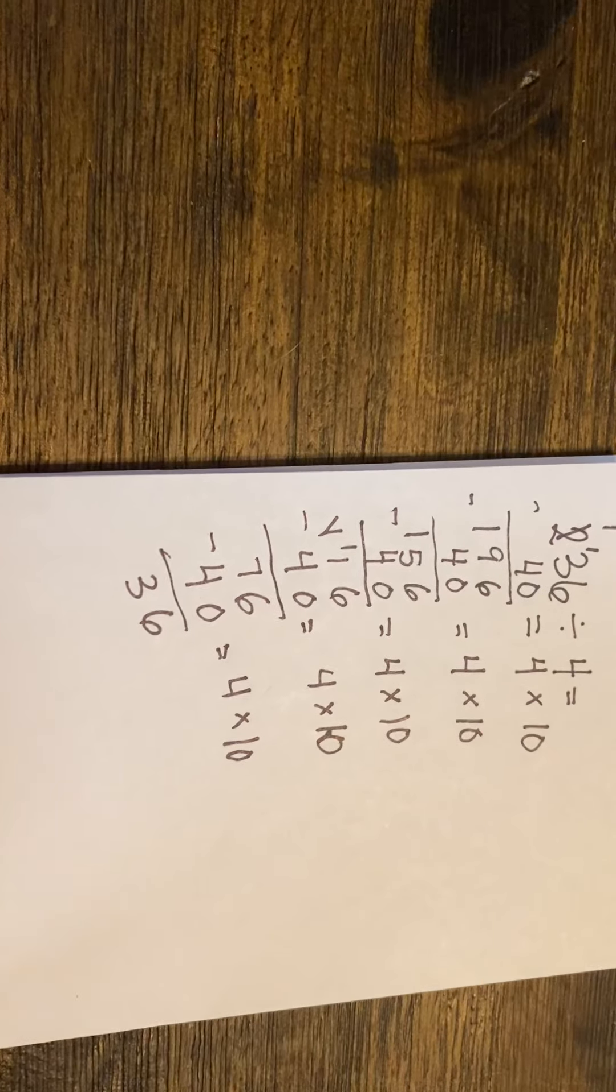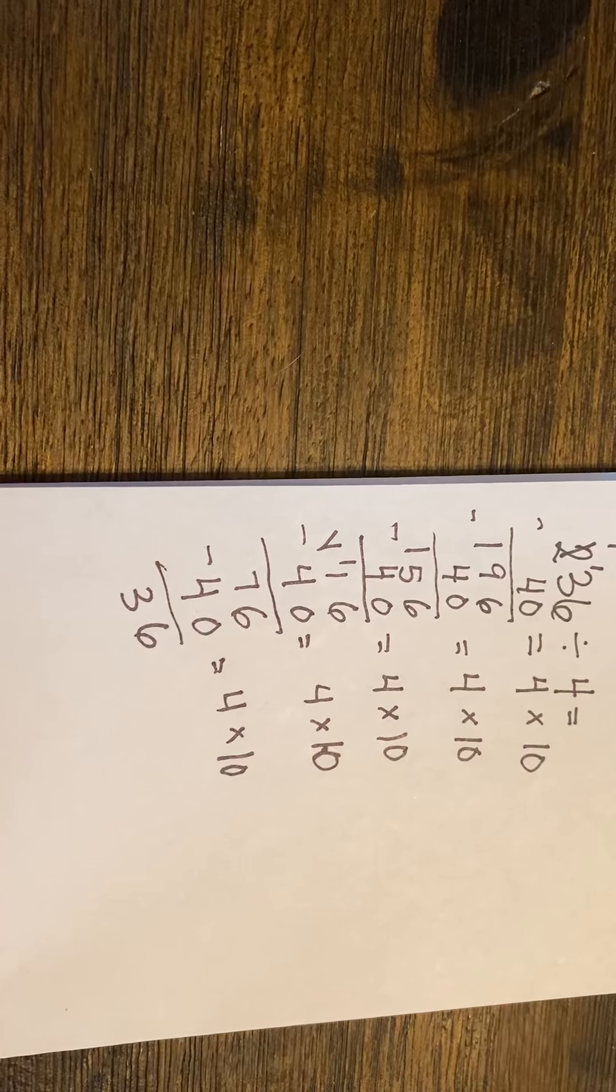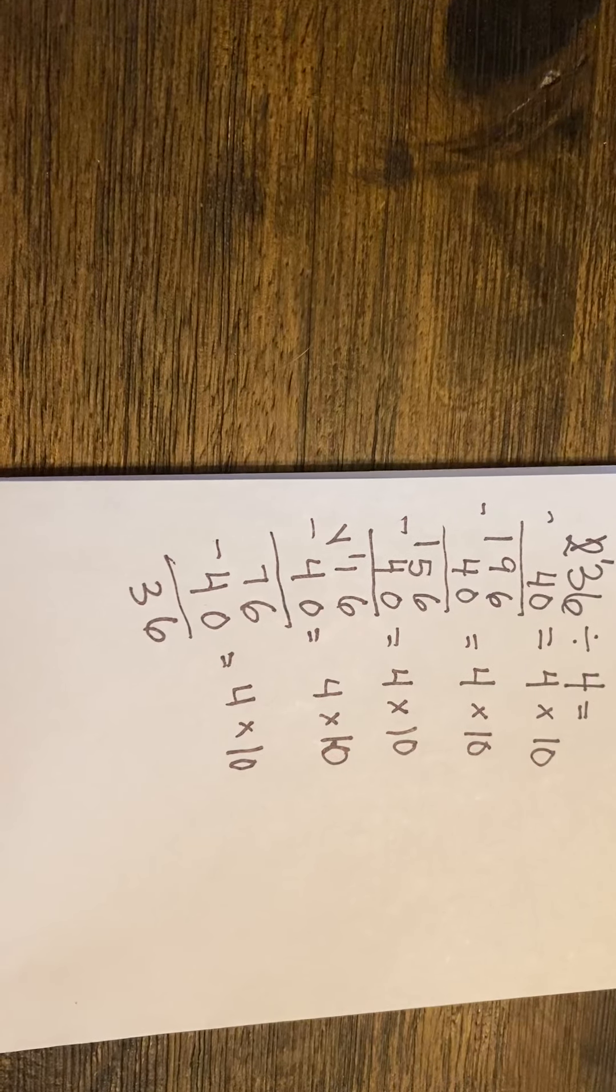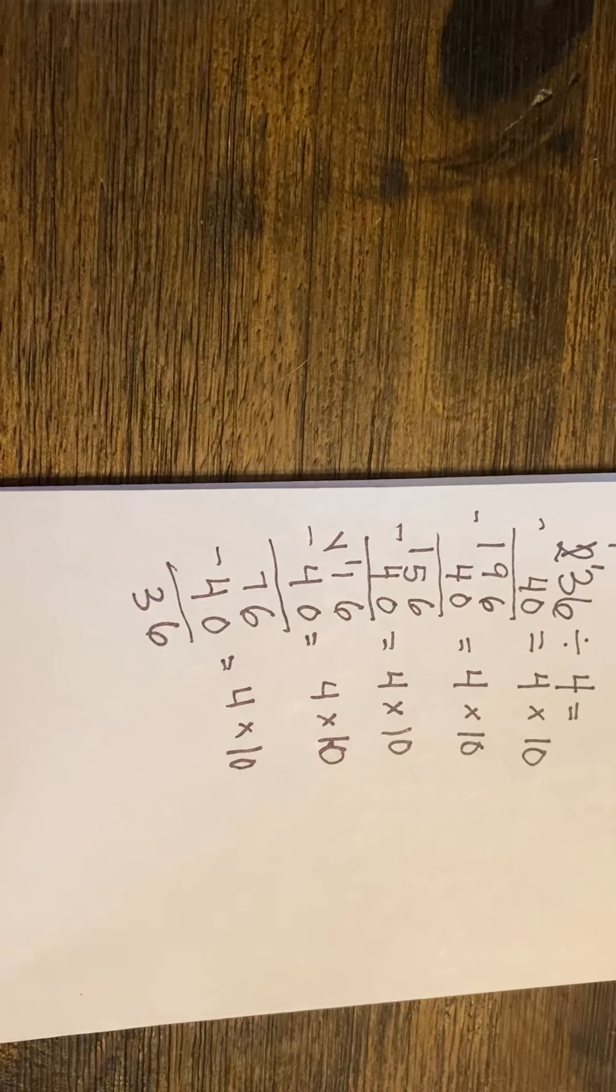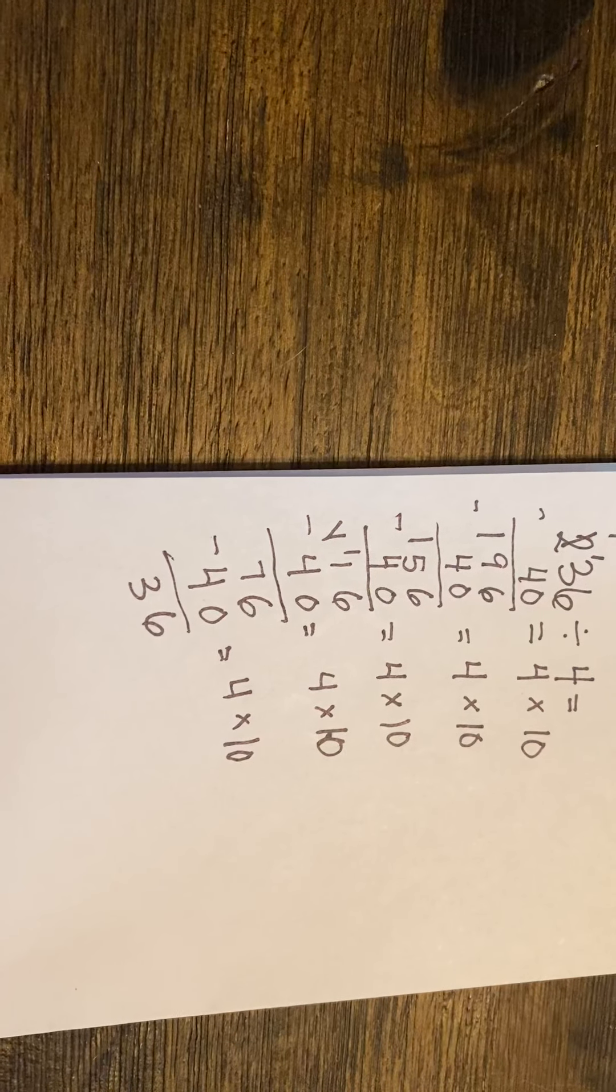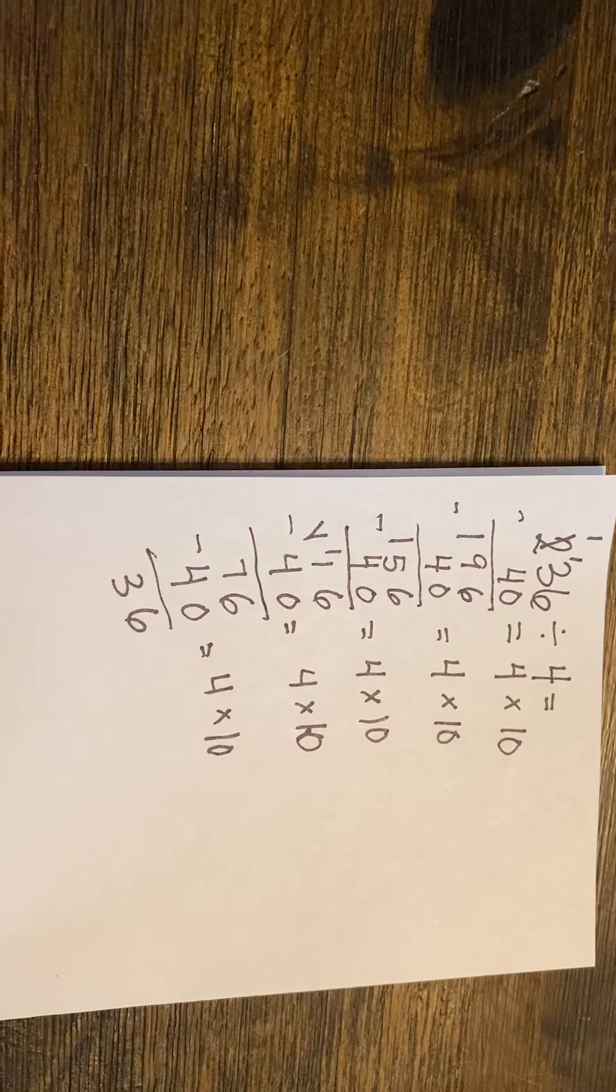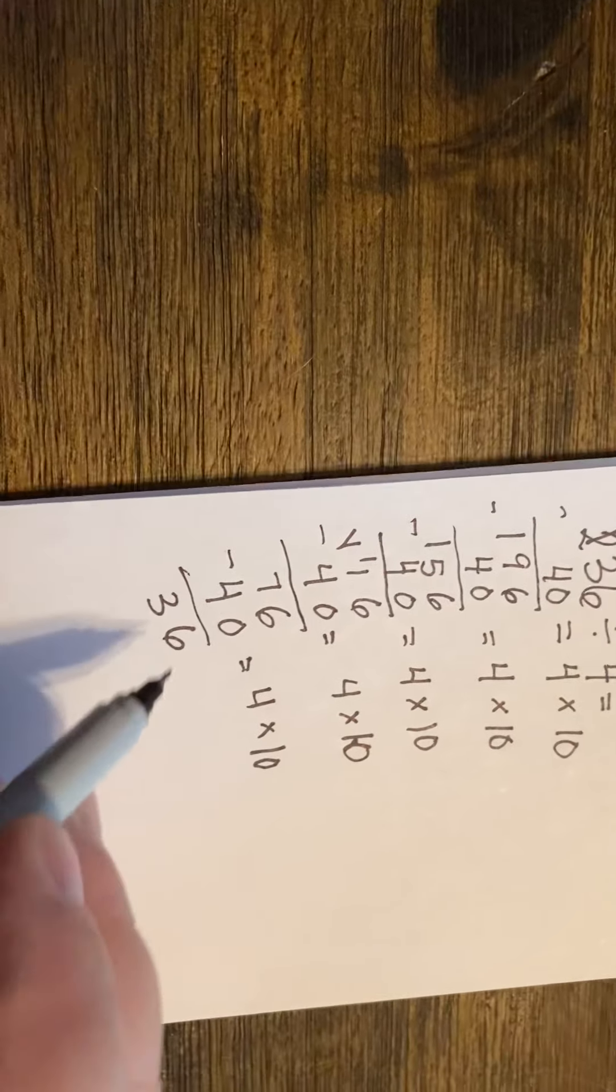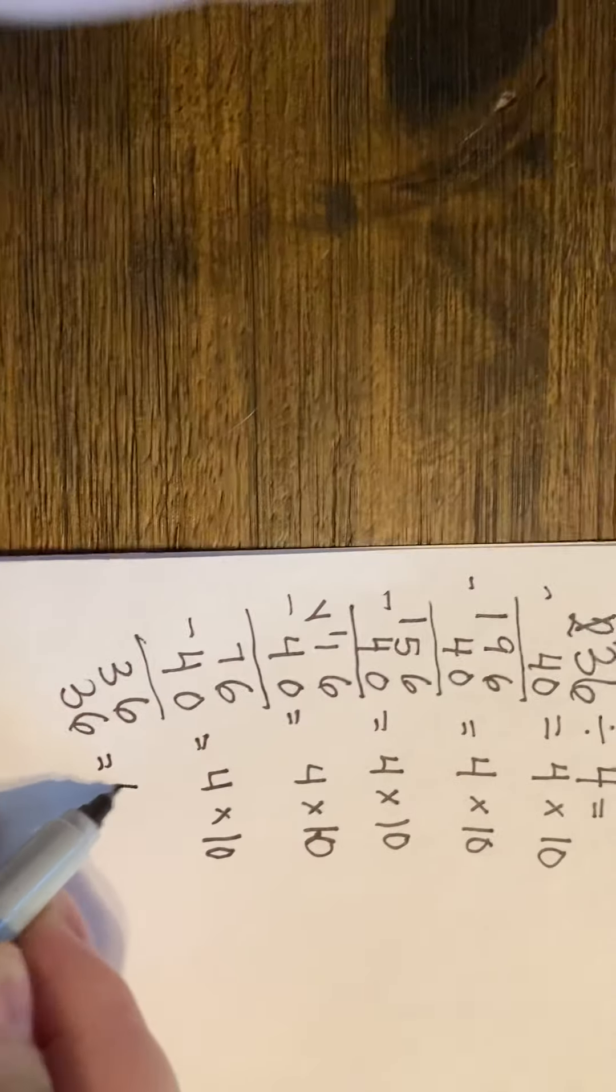But what do we know about 4 that we could take out of 36? Let's see. We know that 4 times 5 is 20, 4 times 6 is 24, 4 times 7 is 28, 4 times 8 is 32, and 4 times 9 is 36. So if we know that 36 equals 4 times 9.